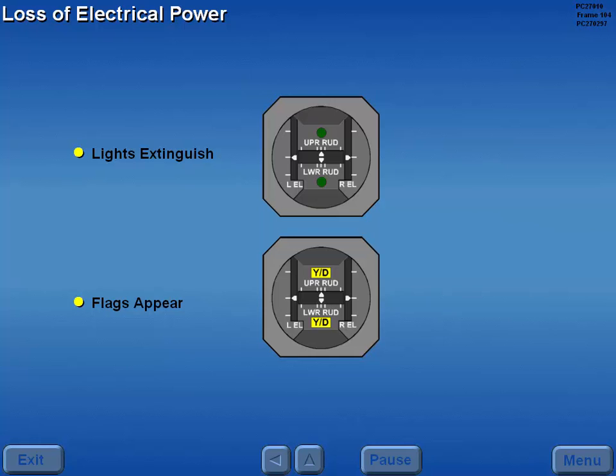During a loss of electrical power, the POM is referenced for air speed and altitude limitations.